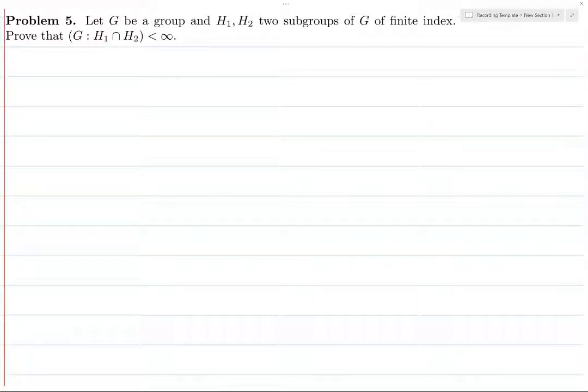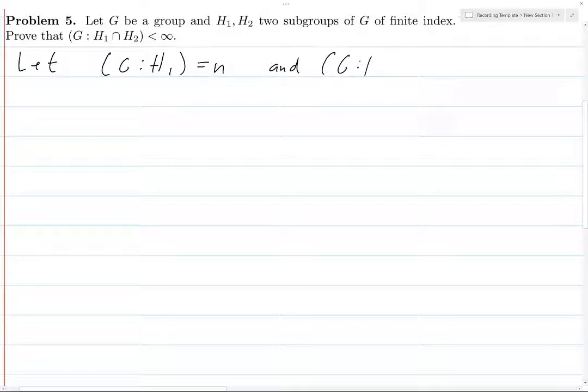Alright, let's see how my H1 mic works out for these exercises. Let's do this problem: subgroups of finite index. Prove that their intersection has finite index. Okay, so first let's give these indices names. We'll let the index of H1 in G be n and the index of H2 in G be m.